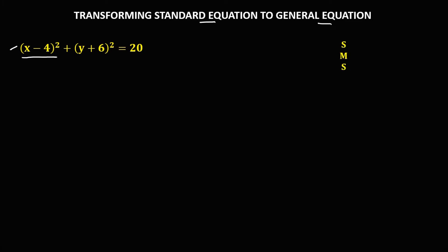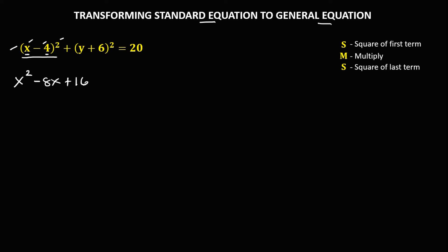SMS: S is the square of the first term, so the square of X — that's X squared. Then M is multiplication, so we multiply these three numbers: 2 times negative 4, that's negative 8, and negative 8 times X — that's negative 8X. Then the last S is the square of the last term, so the square of 4 — that's positive 16.